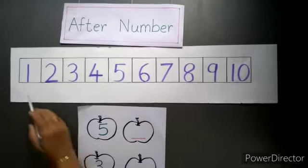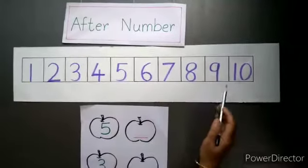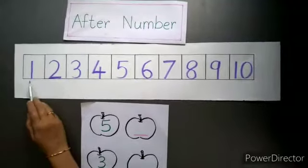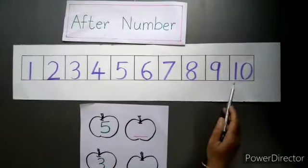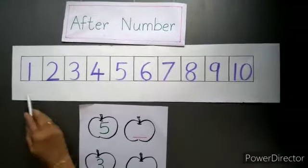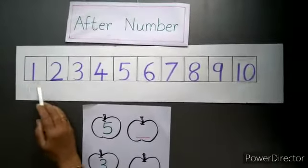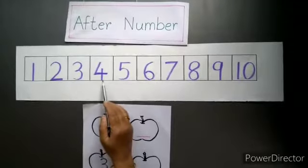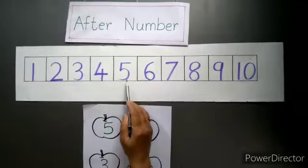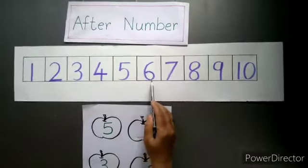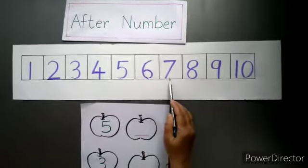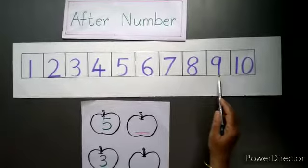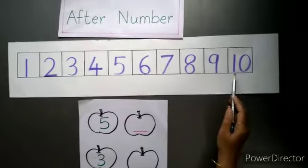Now we have a number line from 1 to 10. I will say the numbers: 1, 2, 3, 4, 5, 6, 7, 8, 9, 10.